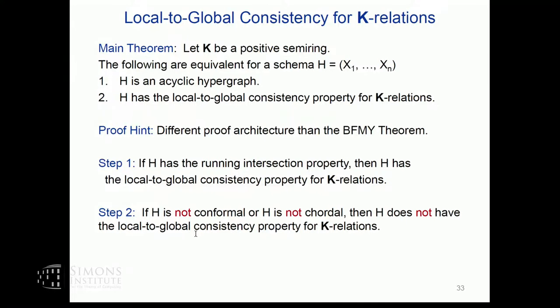I'm wondering if there is a relation between the notion of k-anonymity used in security and this notion of strict local and global consistency. I know k-anonymity — it was one of the early attempts at privacy, but it didn't go very well. I have thought about this a long time ago but don't see the connection right away; maybe we can discuss it.